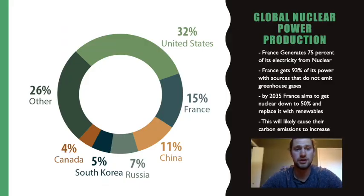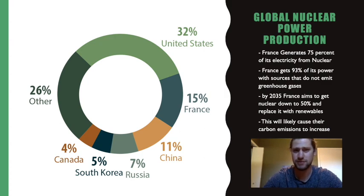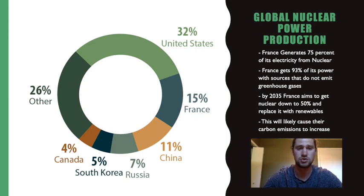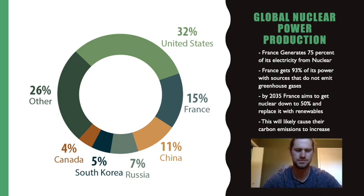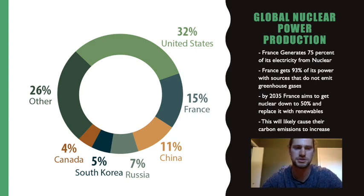A graph of nuclear energy production around the world shows the United States on top, followed surprisingly by France. France has over 40 nuclear reactors and relies heavily on nuclear energy, getting about 75% of its total energy from nuclear and additional amounts from hydro and wind — meaning about 93% of France's energy production is clean. China is just below France, and Canada sits at about 4%, concentrated mainly in Ontario.